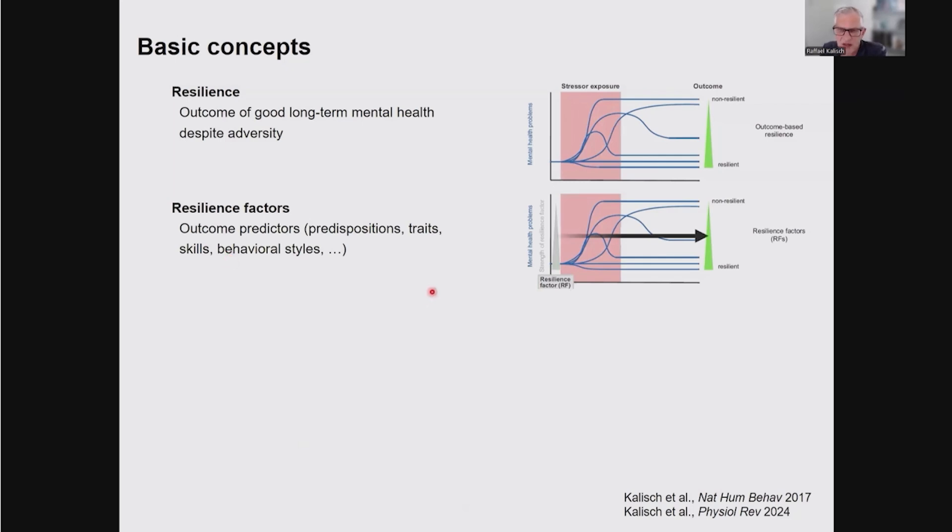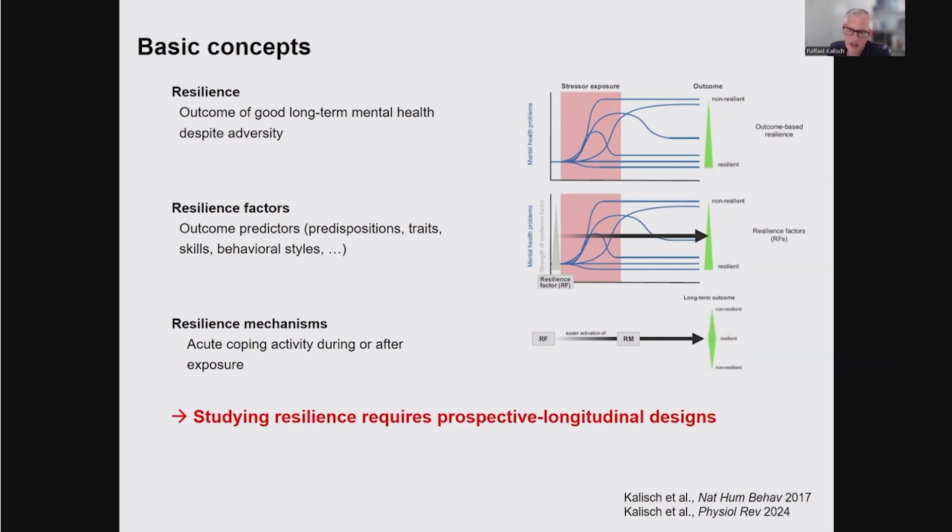Resilience factors are predictors of that outcome. So they can be predispositions, traits, skills, behavioral styles, and features of your brain. If a resilience factor measured at baseline is associated with good long-term mental health, then we call it a resilience factor. A resilience mechanism is something that you do actively or a function that you recruit while or after you've been exposed to stressor. The relationship is that a resilience factor makes the activation of resilience mechanisms more likely. For instance, if good emotion regulation skills are a resilience factor, they make it more likely that you will recruit those skills when confronted with life stresses, making a good outcome more likely.